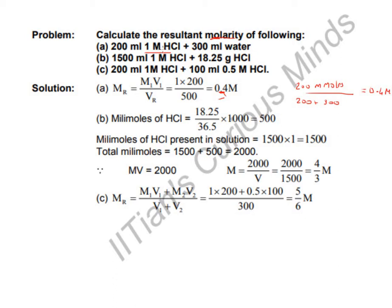In the first question we added volume to volume (aqueous solution). Now we'll solve this differently. The number of millimoles added will increase. The millimoles of HCl added = moles × 1000, where moles = weight / molecular weight of HCl = 18.25 / 36.5 = 0.5 moles. So 500 millimoles of HCl are added.